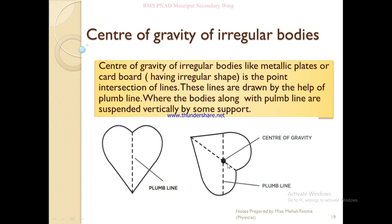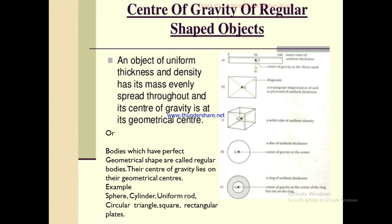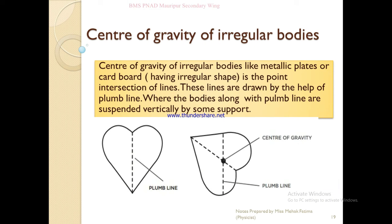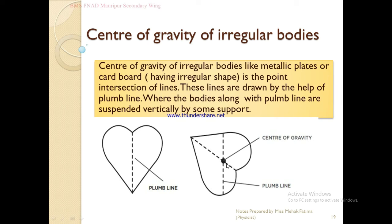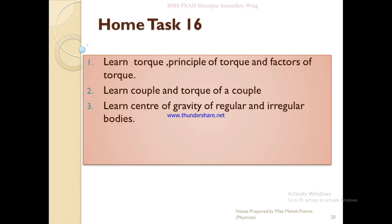To find the center of gravity of an irregular body, you draw lines from different suspension points using the plumb line. When you draw two lines and find their intersection point, that intersection point is the center of gravity of the irregular body.